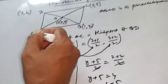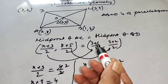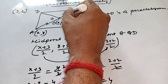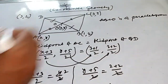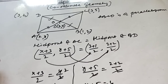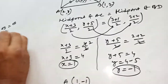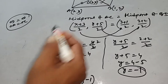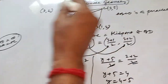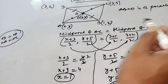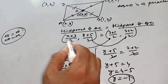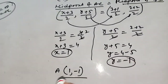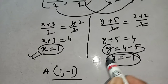In a parallelogram, the diagonals AC and BD intersect equally. That means AO equals OC and OD equals OB. So O is the midpoint of AC and BD. Hence, midpoint of AC equals midpoint of BD. I find midpoint of AC as x1 plus x2 by 2, y1 plus y2 by 2, equal to midpoint of BD. This x-value equals that x-value and this y-value equals that y-value, giving us the values of x and y.